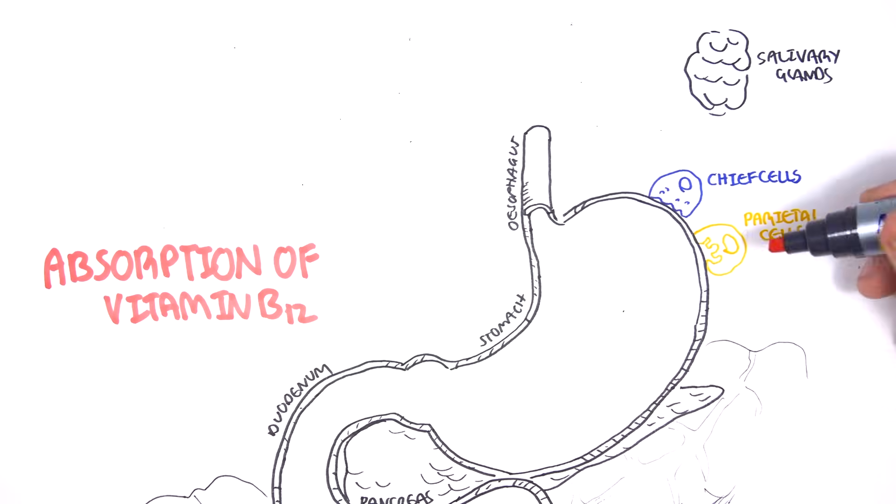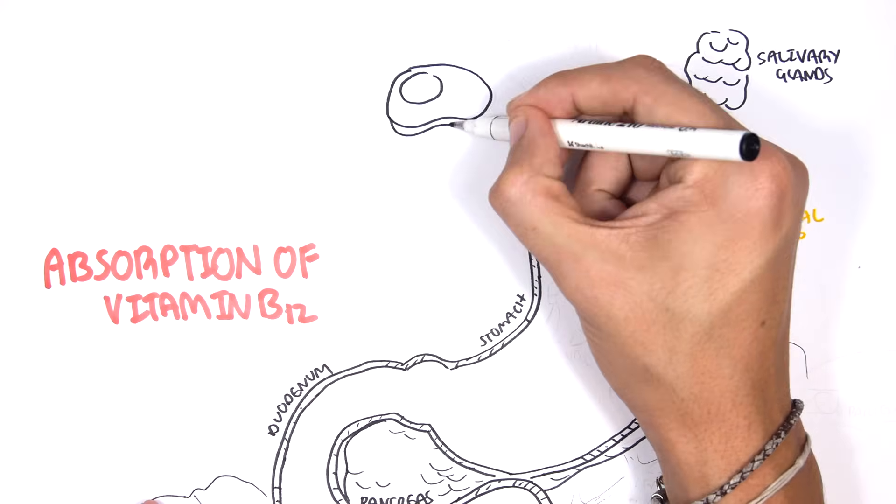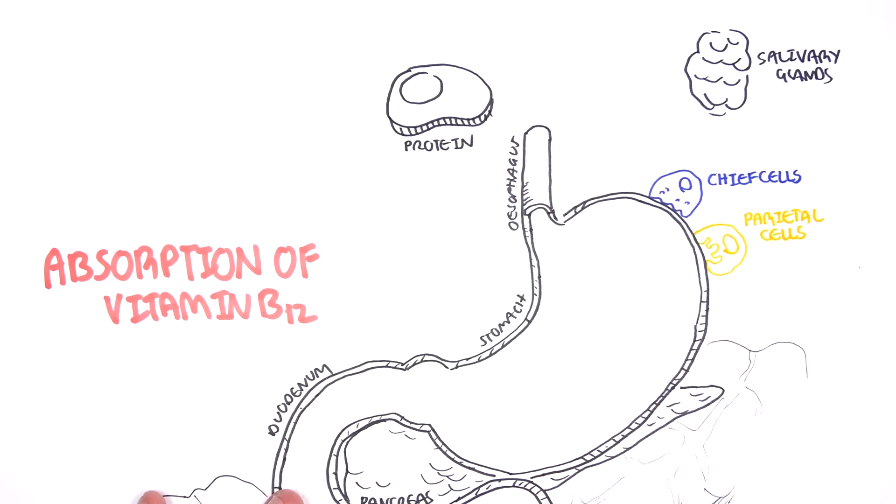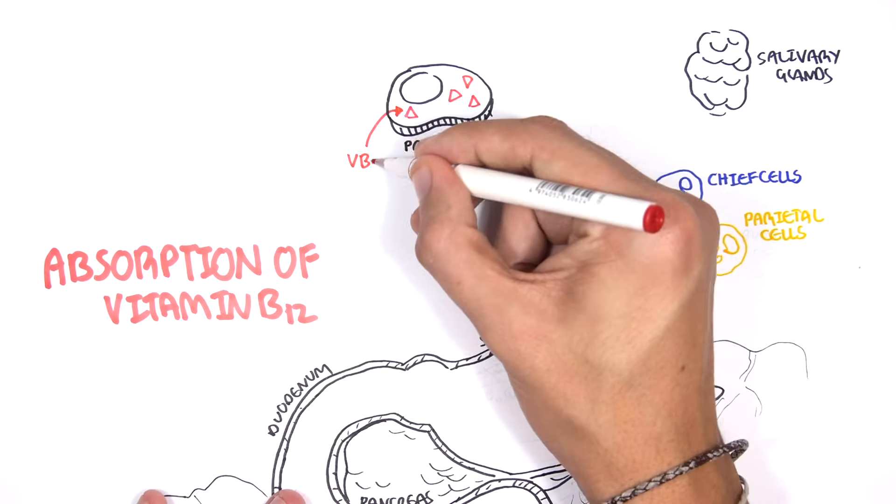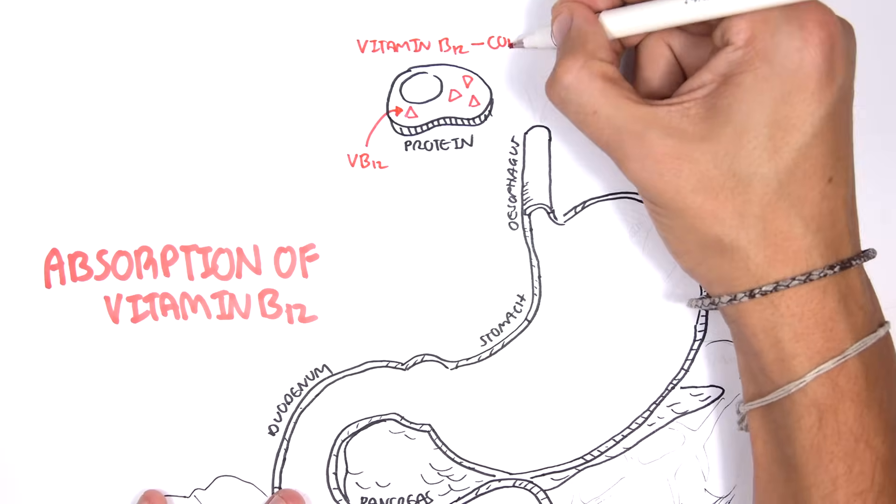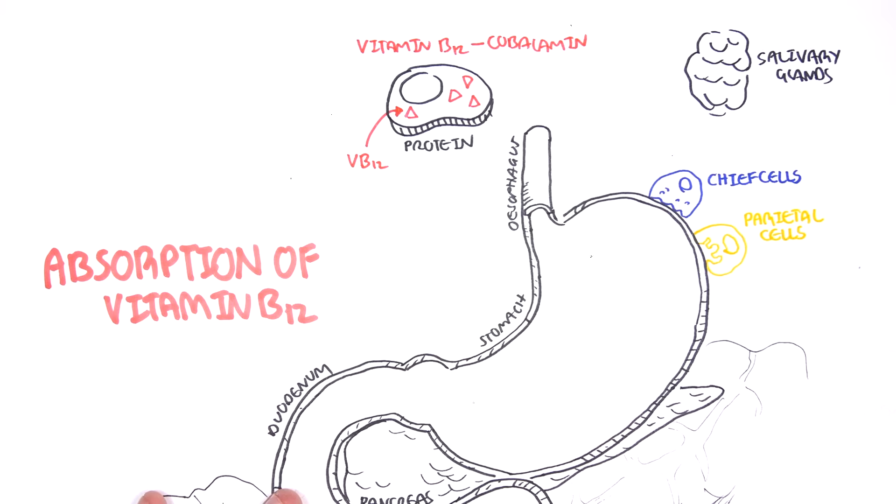So where do we get vitamin B12 from? Well, we can get it from a variety of foods such as egg, milk, fish, and red meat. So here is a red meat which contains vitamin B12. Vitamin B12 is known formally as cobalamin.